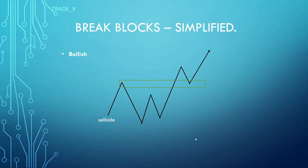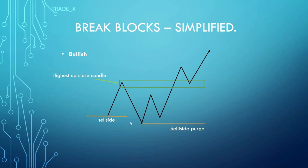After this, we're looking for price to move higher to retest the breaker block — that would be our entry for continuation higher. So at this low, sell side resides. Price moves higher and we frame where the breaker resides — the highest up-close candle, which would be a green candle in the swing high. We don't do anything until price has come down and done a sell side purge. The highest up-close candle sits in between a swing high and two swing lows, and we must have a purge of the previous sell side.